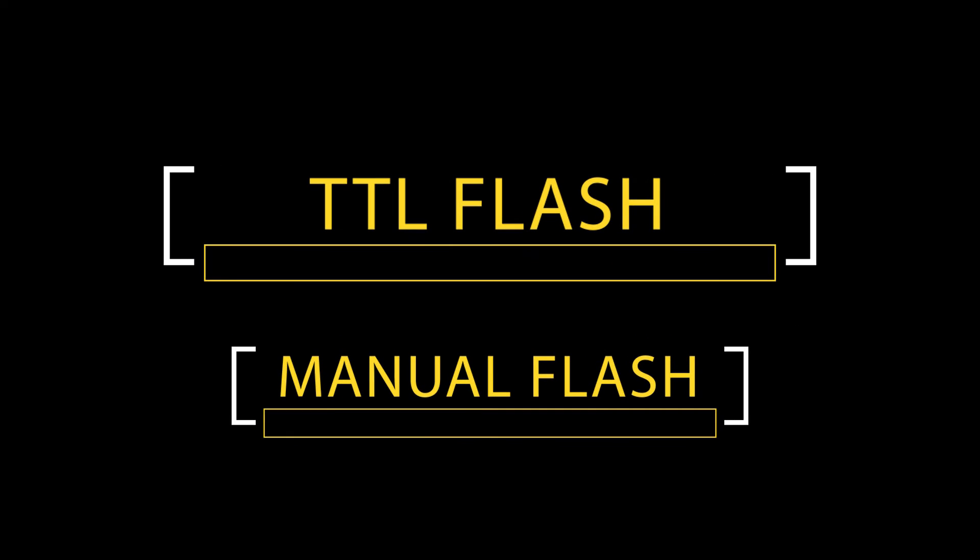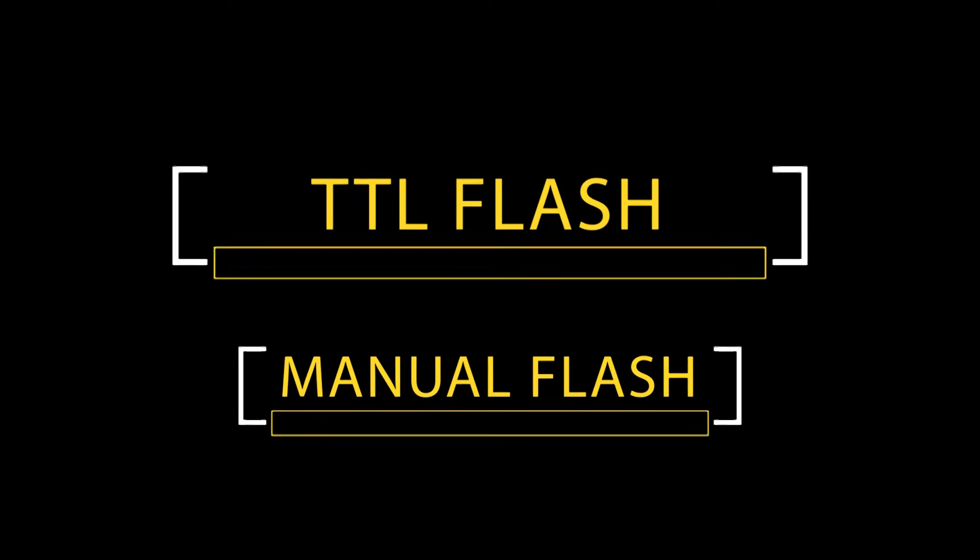Welcome to Amanjaiswal's YouTube channel. If you are interested in flash photography, there are two types of flashes: one TTL flash and second manual flash. TTL stands for through the lens. In this video, I will be telling you about these two flashes, TTL and manual.